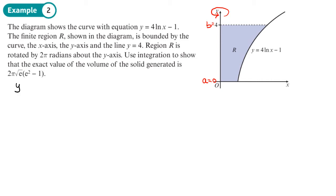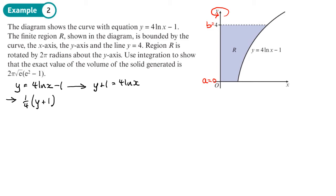So the first thing: I've got y equals 4 log x minus 1. I need to get x as a function of y, so basically I need to make x the subject. Let's add 1 to both sides, then divide both sides by 4. So I'll write it as a quarter y plus 1 equals log x. Then I'm going to raise both sides to the power e, and I will have x equals e to the power (y/4 + 1/4).